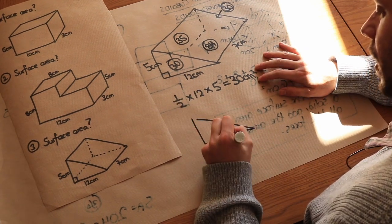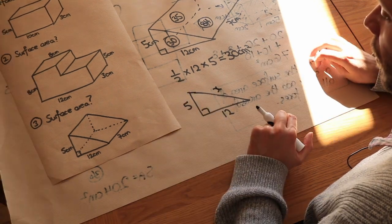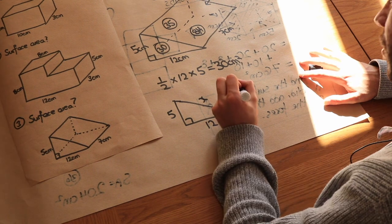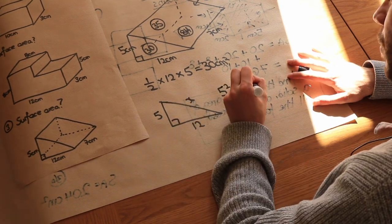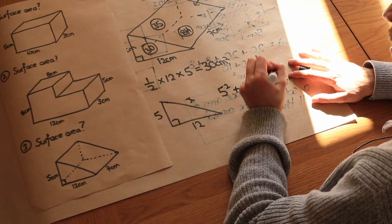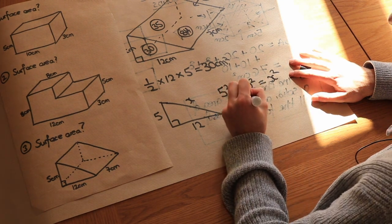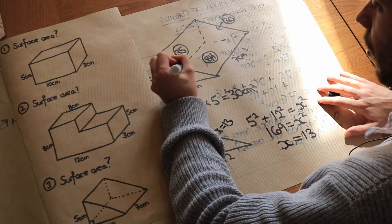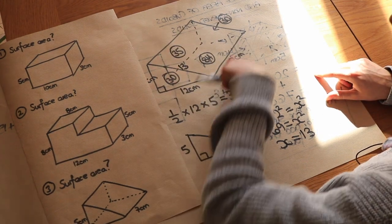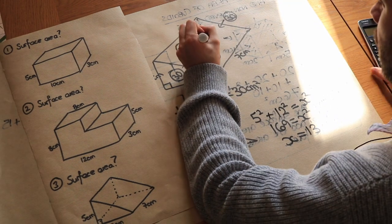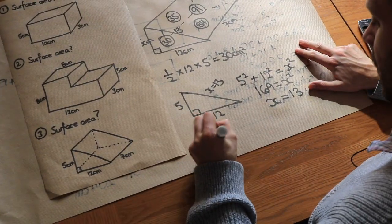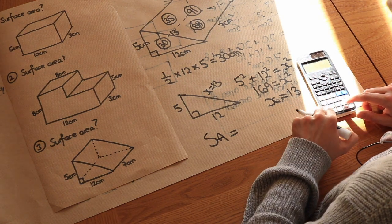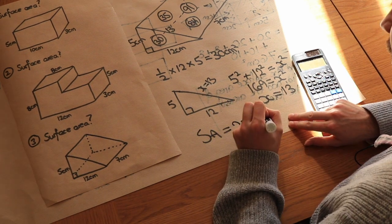Using Pythagoras' theorem: 5 squared plus 12 squared equals x squared. That gives 25 plus 144 equals 169, so x equals 13. The sloped face is therefore 13 times 7, which is 91. Adding all faces: 30 plus 30 plus 84 plus 91 plus 35 gives a total surface area of 270 centimetres squared.